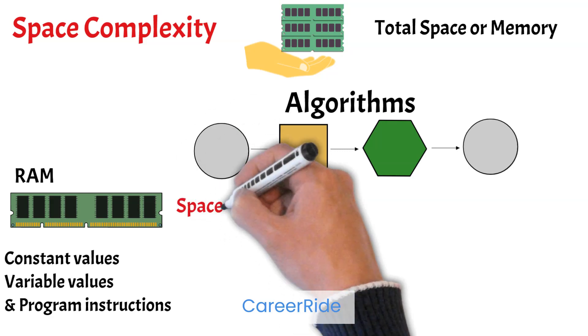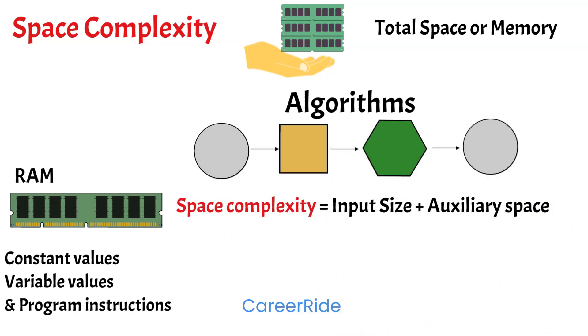Space complexity includes both auxiliary space and space used by the input. Now what is this auxiliary space? Auxiliary space is nothing but the temporary or extra space used by the algorithm. For example, instructions like function calls, return statements, print statements consume memory when a program is being executed. And the space consumed by these instructions is called auxiliary space.